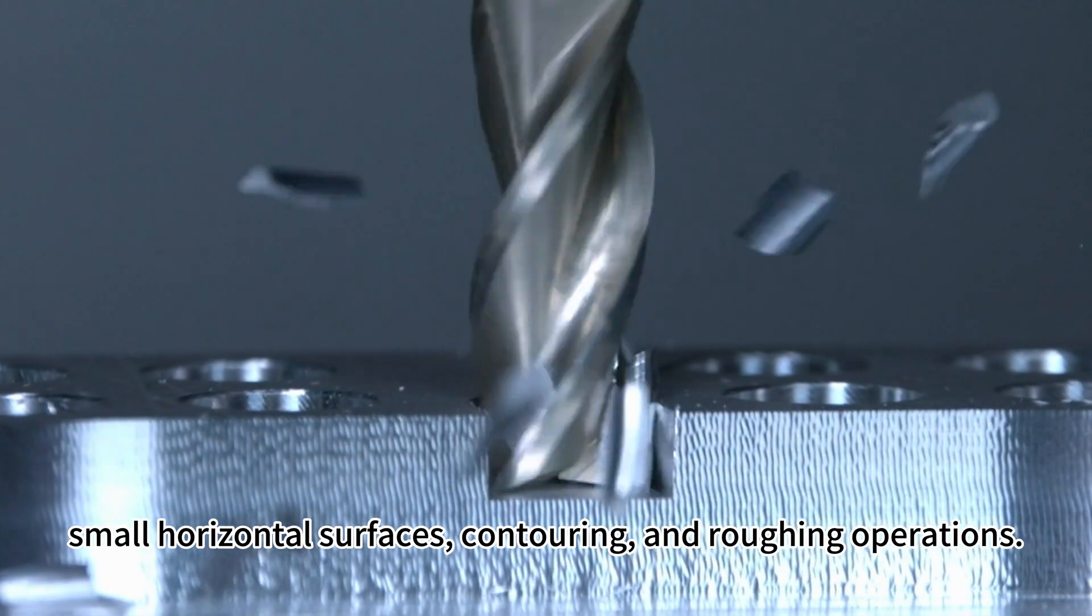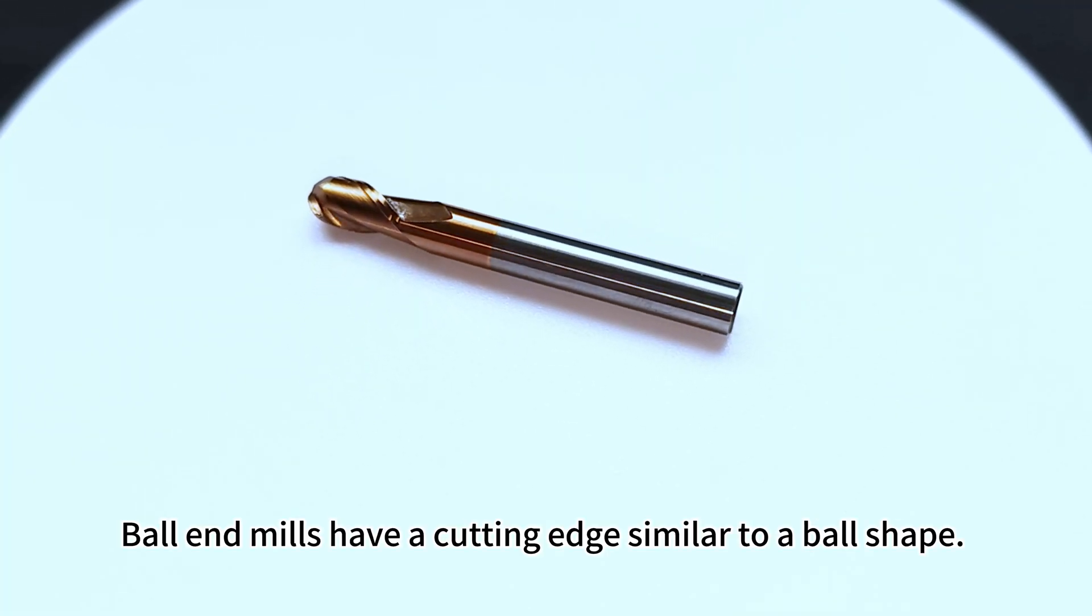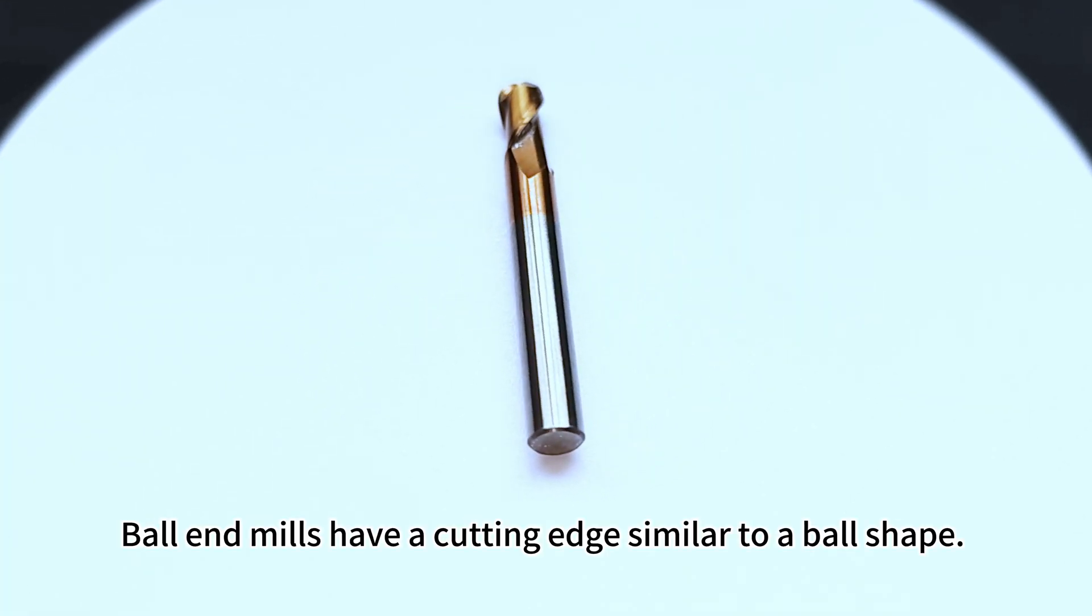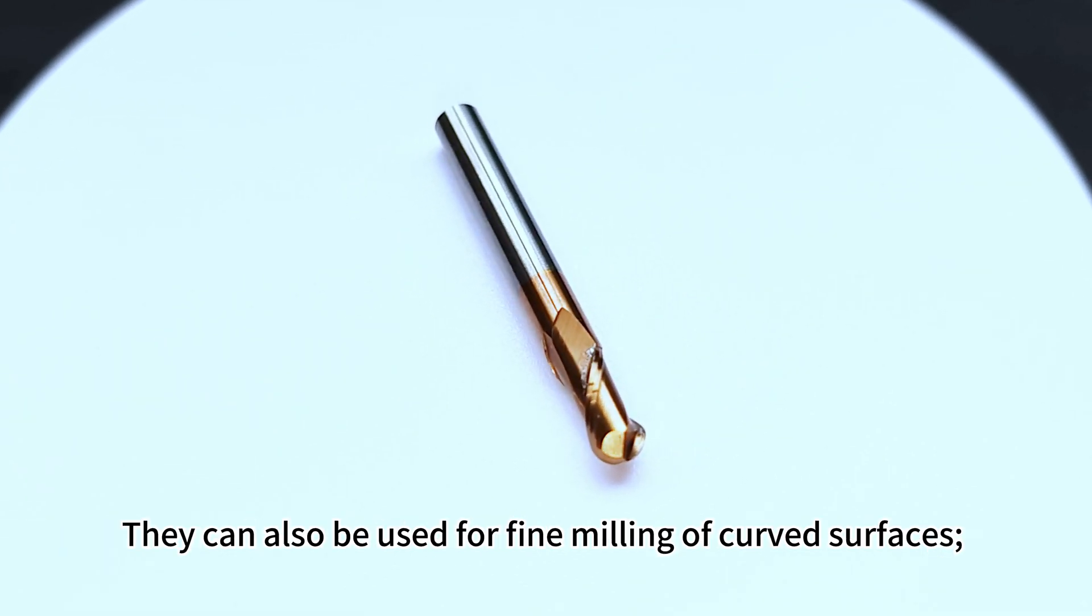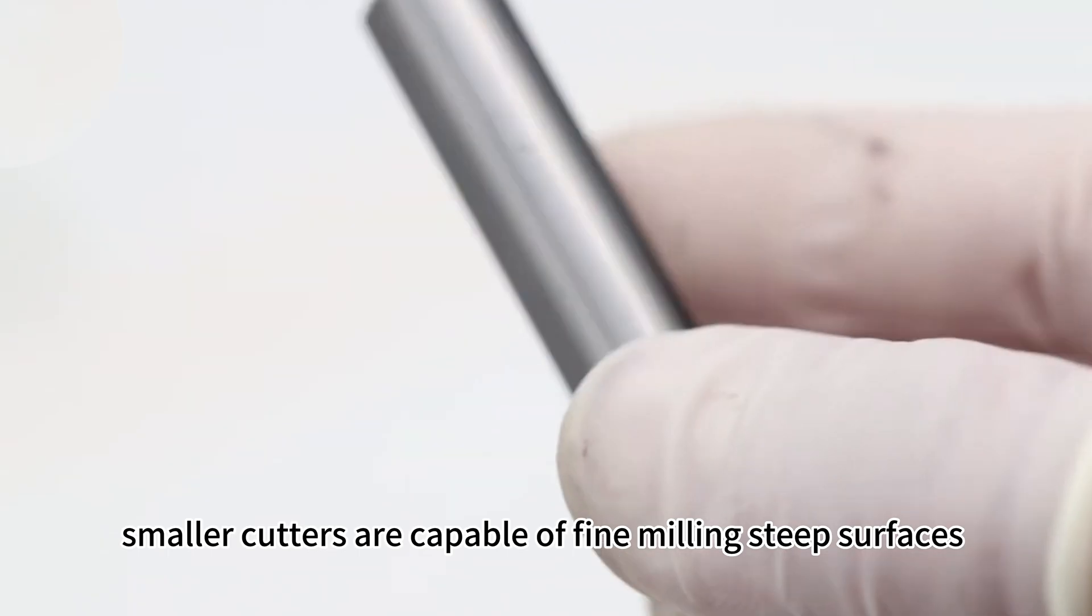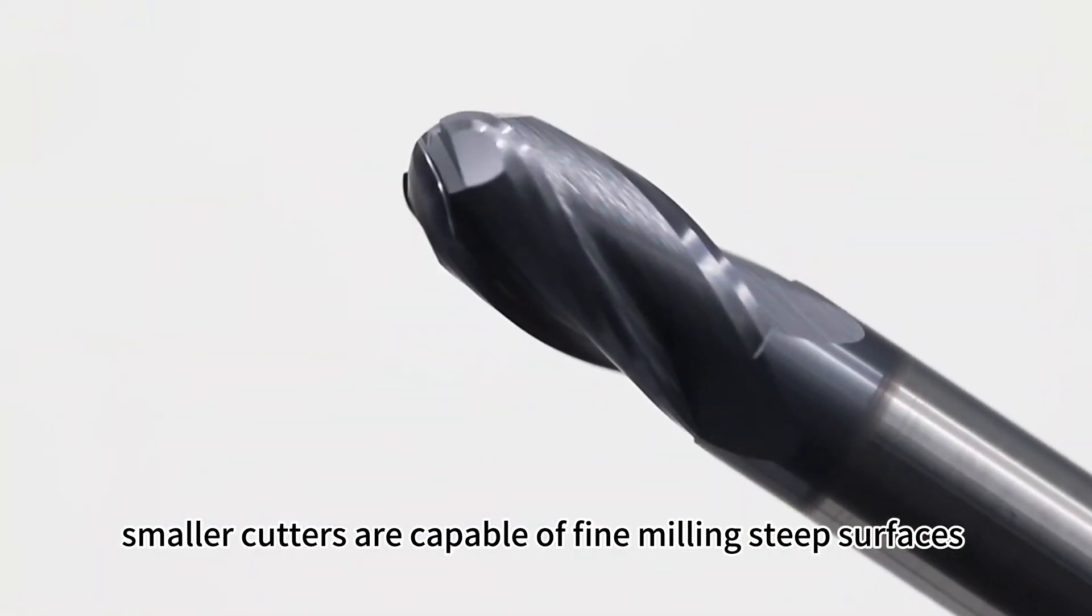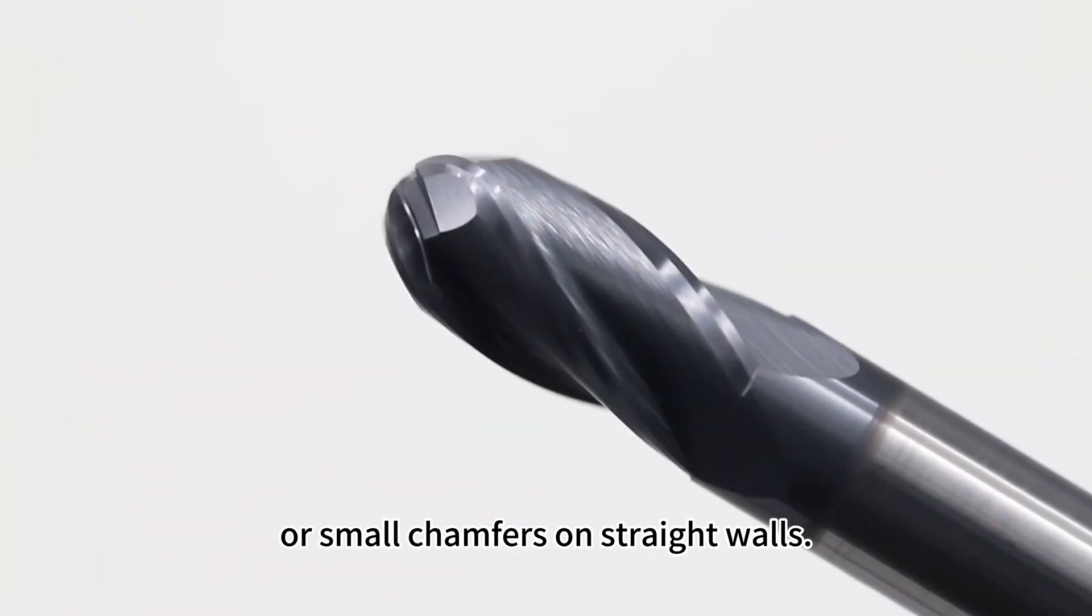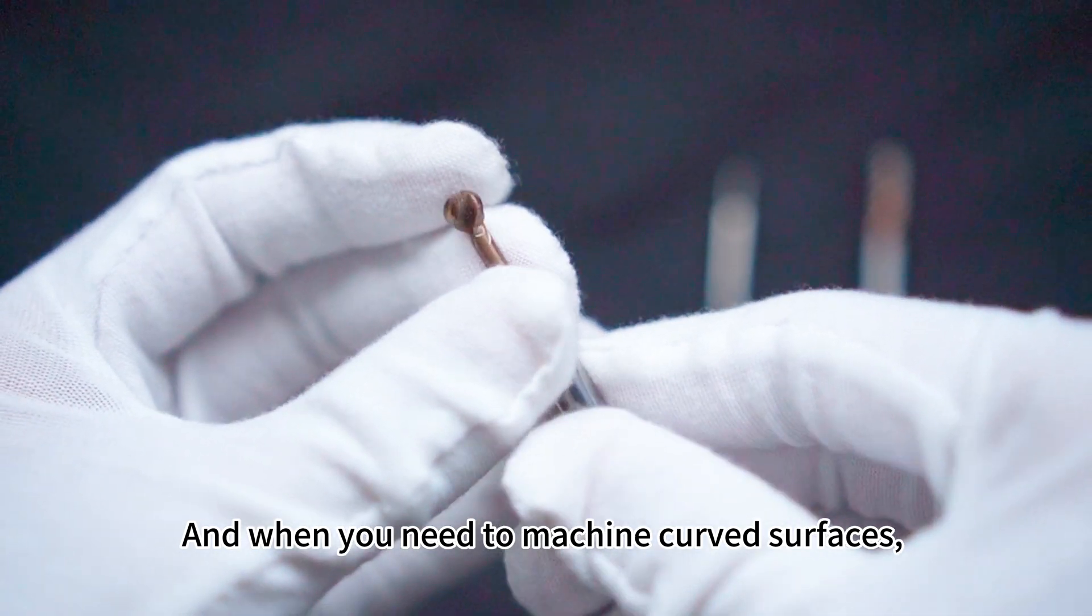Ball end mills have a cutting edge similar to a ball shape. They are used for machining various curved surfaces and arc grooves. They can also be used for fine milling of curved surfaces. Smaller cutters are capable of fine milling steep surfaces or small chamfers on straight walls.